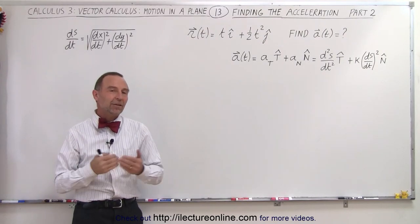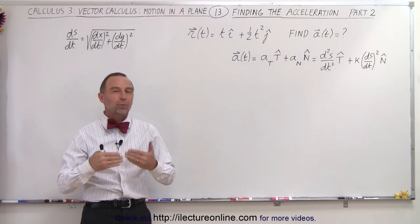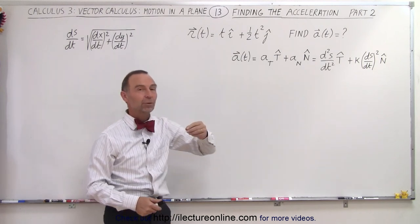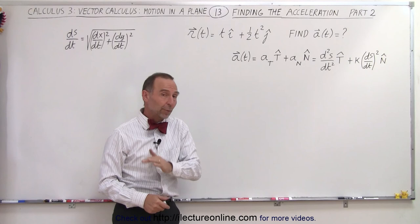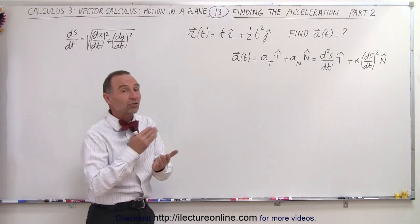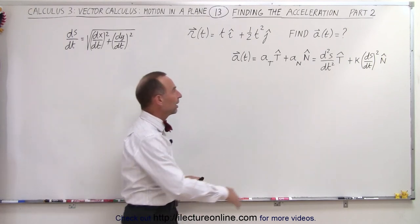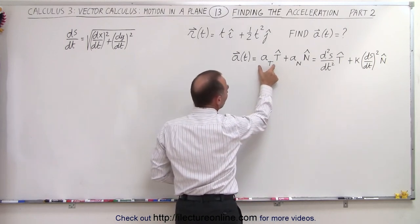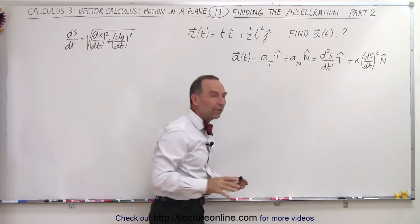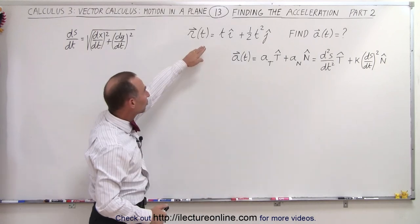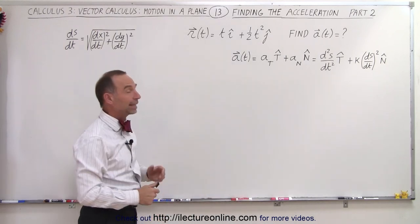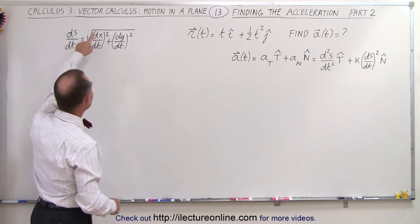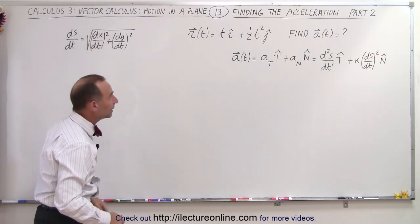Welcome to our Lecture Online. In this video we're going to find the acceleration vector of the very same position vector, but in this case not in terms of the x and y components, but in terms of the tangential and the normal components. We have the definition, so we're going to need to find the tangential magnitude and the normal magnitude of that particular vector. Keep in mind that ds/dt is defined as the square root of dx/dt squared plus dy/dt squared.